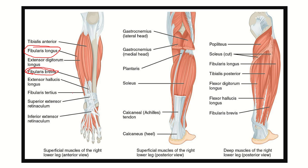The anterior compartment muscles include tibialis anterior, extensor digitorum longus, extensor hallucis longus, and fibularis tertius. This group of muscles is present in the anterior compartment of the leg.